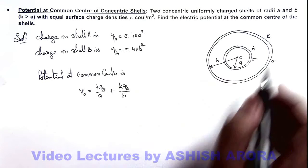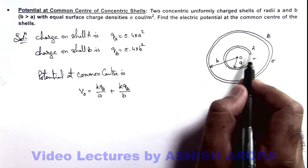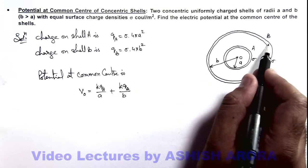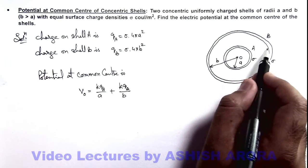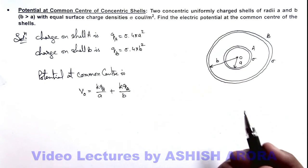And if we wish to calculate the potential at outer shell it'll be due to a it is kq_a by b, and due to itself it is kq_b by b. And similarly at any point we can find out the potential.